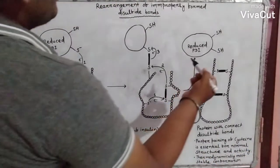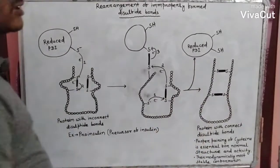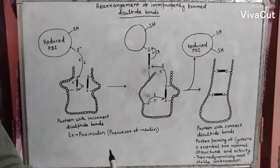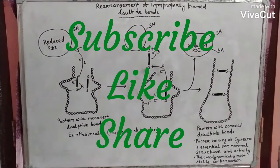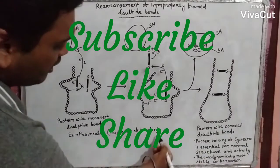The rearrangement of improperly formed disulfide bonds also provides the thermodynamically most stable conformation to the substrate protein. This type of rearrangement of improperly formed disulfide bonds is found in pro-insulin, which is considered as the precursor of insulin.